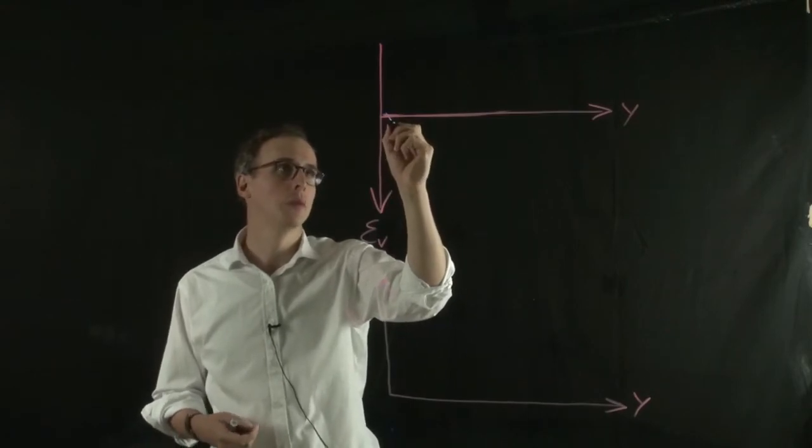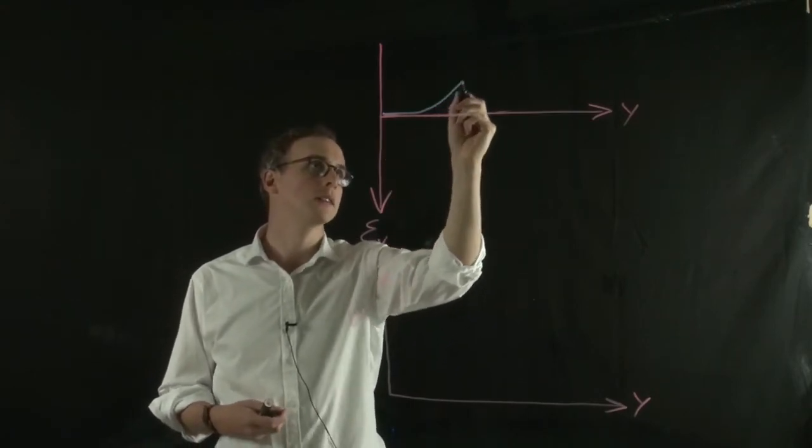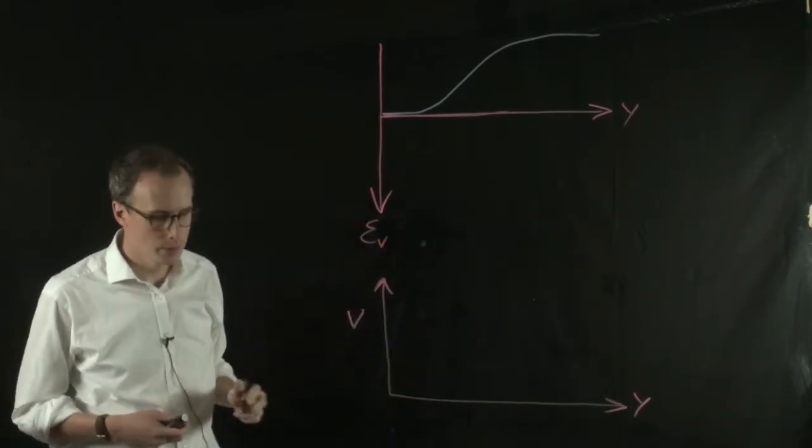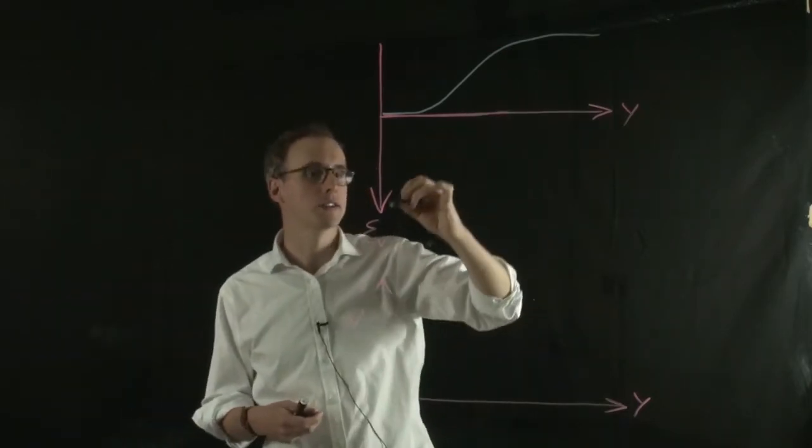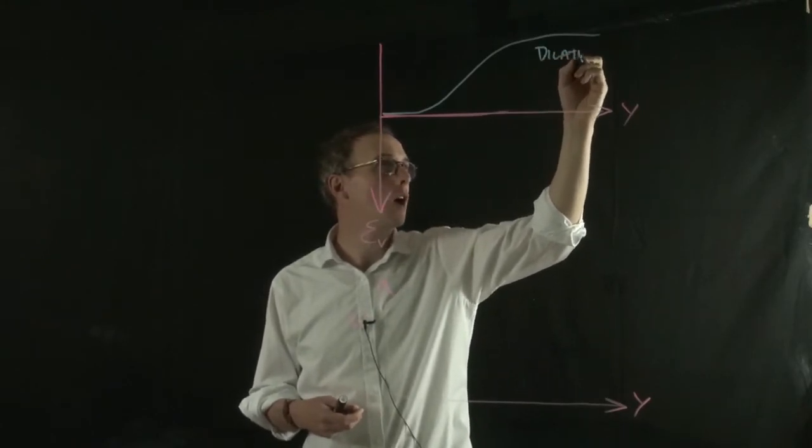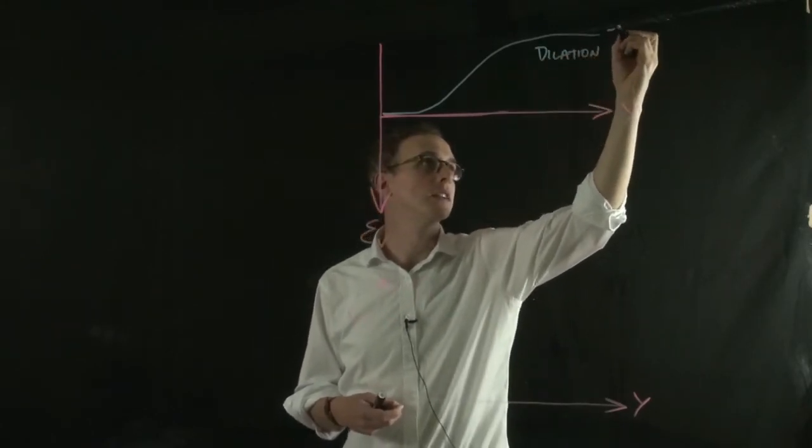an initially dense material will do something that looks a bit like this. So this is dilation. So this is an initially dense material.